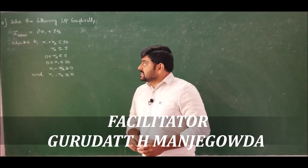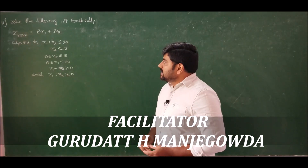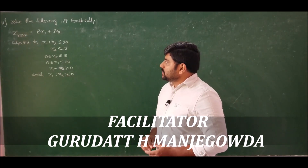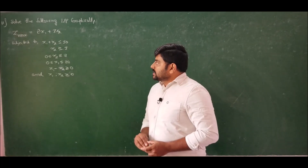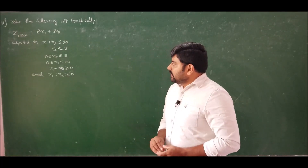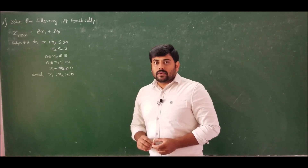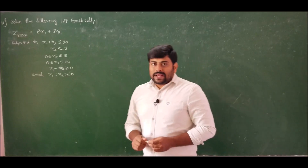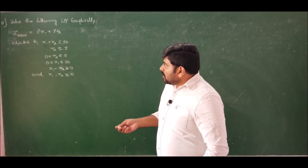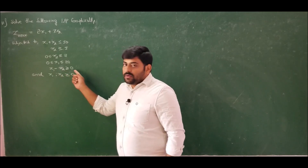Problem number 11 states: solve the following linear programming problem graphically. Z max = 2x1 + 3x2, subjected to x1 + x2 ≤ 30, x2 ≥ 3, x2 ≤ 12, x1 ≤ 20, and x1 - x2 ≥ 0. This is a mixed constraint maximization linear programming problem.